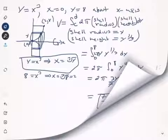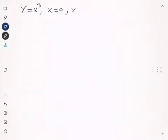Now suppose we still have y equals x cubed, x equals zero, y equals eight, but now we're going to rotate about the line y equals negative one.